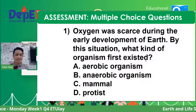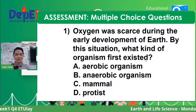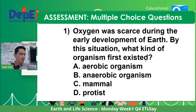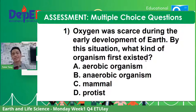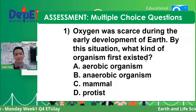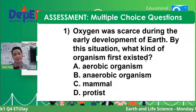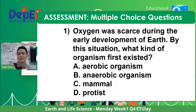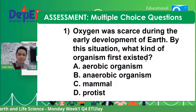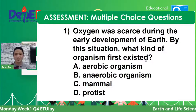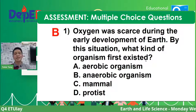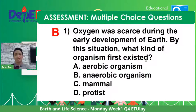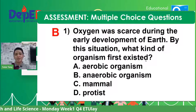Assessment question 1: Oxygen was scarce during early Earth development. What kind of organism first existed? The answer is letter B — anaerobic organisms — some living things can live without the presence of oxygen, and eventually through evolution, things changed. Question 2: Why did the emergence of plants and animals come later than simple living organisms? The best answer is letter A — the cell structures of multicellular organisms are more complex, so simpler forms came first.